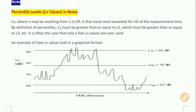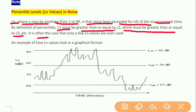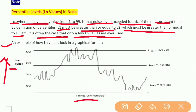Now we shall talk about percentile levels, meaning Ln values. Ln, where n may be anything from 1 to 99, is the noise level exceeded for n percent of the measurement time. By definition, L1 must be greater than or equal to L2, which must be greater than or equal to L3, and so on. Only a few Ln values are ever used in practice. In graphical format, the x-axis shows time in minutes and the y-axis shows sound level in decibels.